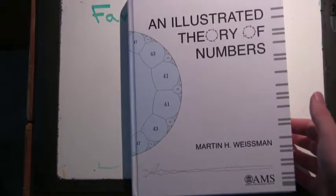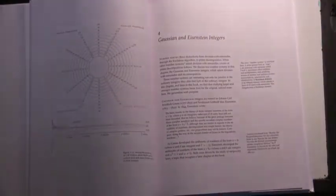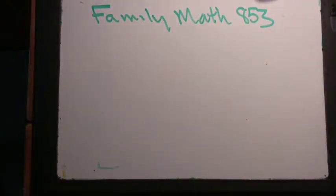So today I thought we'd take a trip down memory lane and revisit this really amazing book called An Illustrated Theory of Numbers by Martin Weissman. I really like this book and what we're going to take a look at today specifically is some ideas that are in Chapter 4 called Gaussian and Eisenstein Integers. Alright, so I'm just going to wing this a little bit.